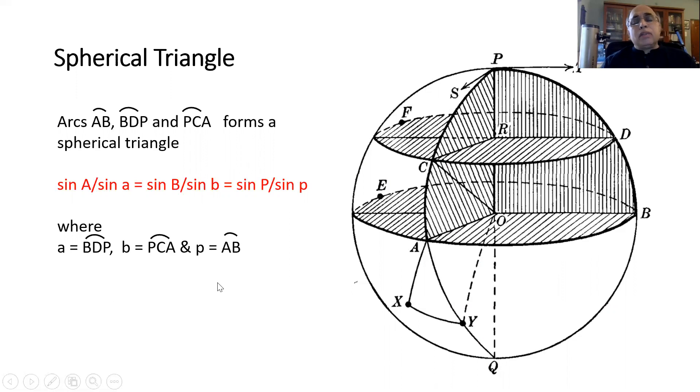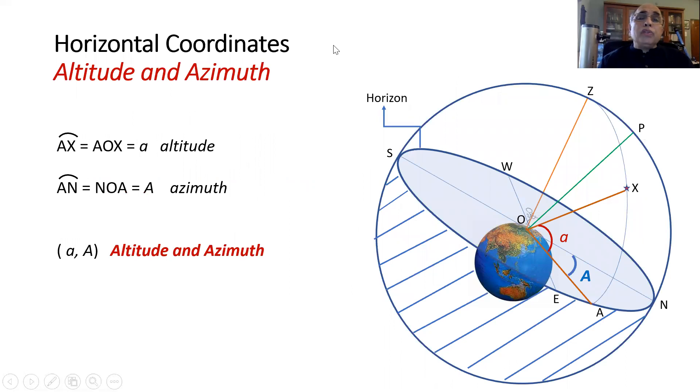So there are many such results which we can obtain, but we shall not get into this now but rather get into positional astronomy right away. The first coordinate system I would like to discuss is the horizontal coordinate system where we use horizon as a reference frame.